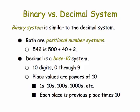Now the decimal system is a base 10 system. It has 10 digits, 0 through 9, and the place values are all powers of 10. There's the ones place, the tens place, the hundreds place, and each place value is the previous place value times 10. So the tens place is 10 times the ones place.